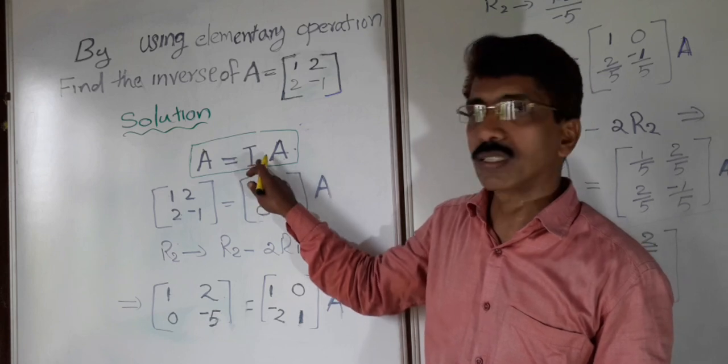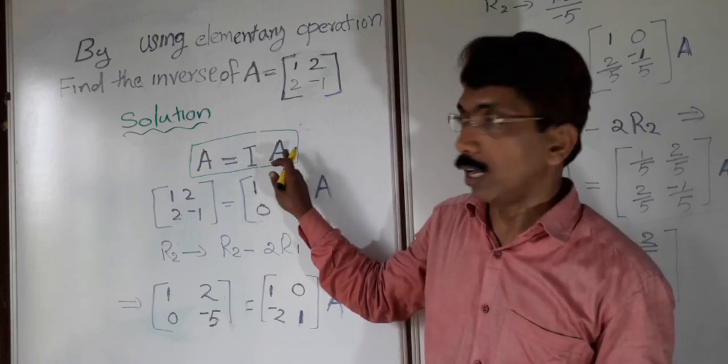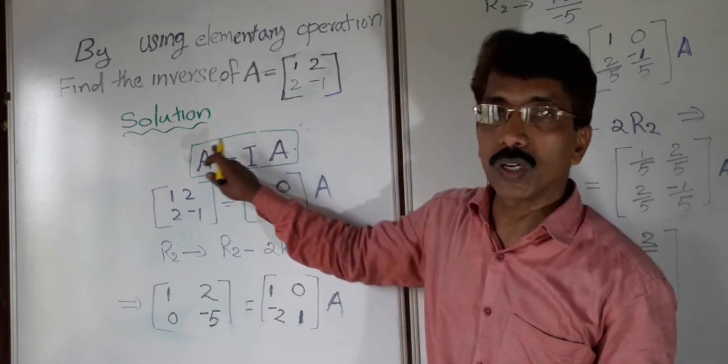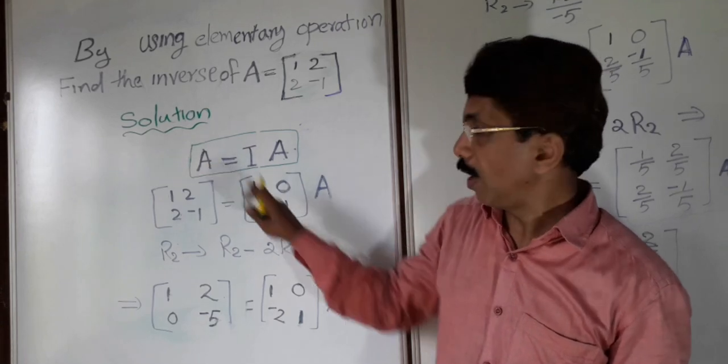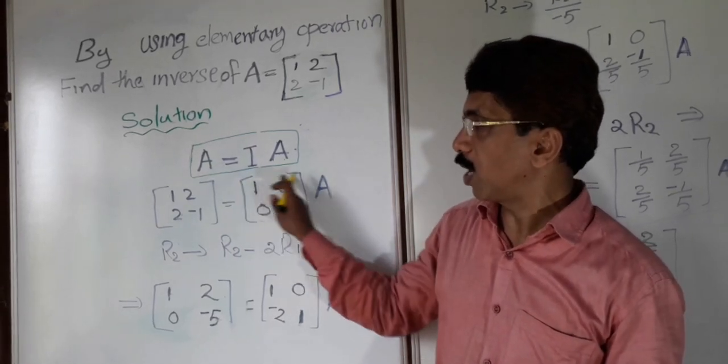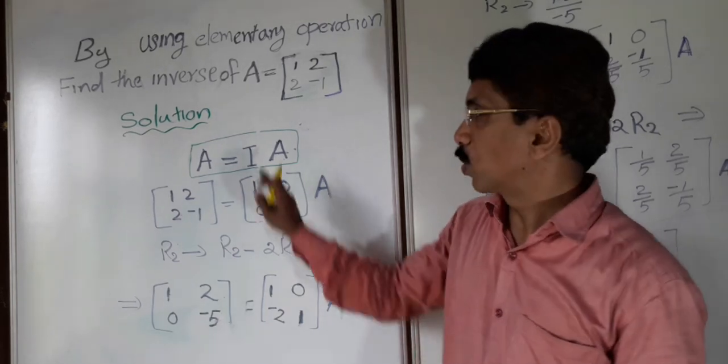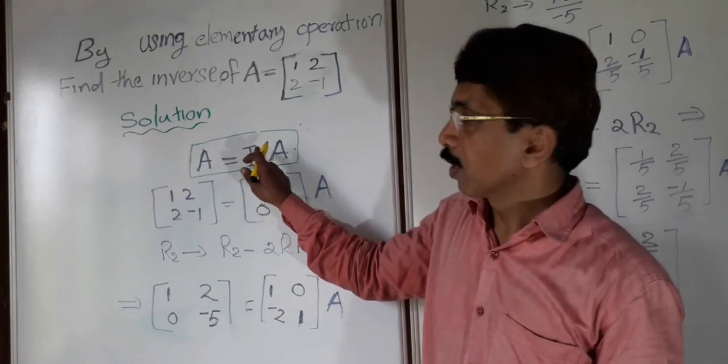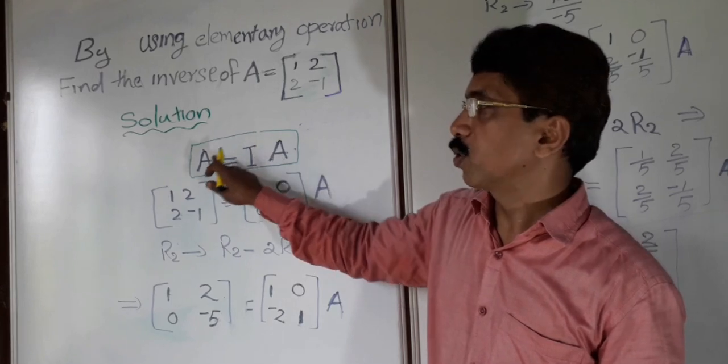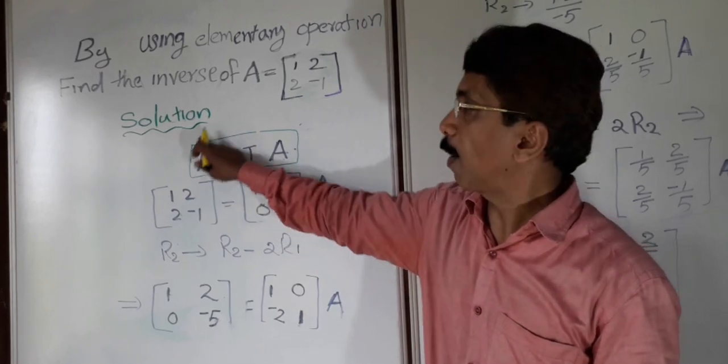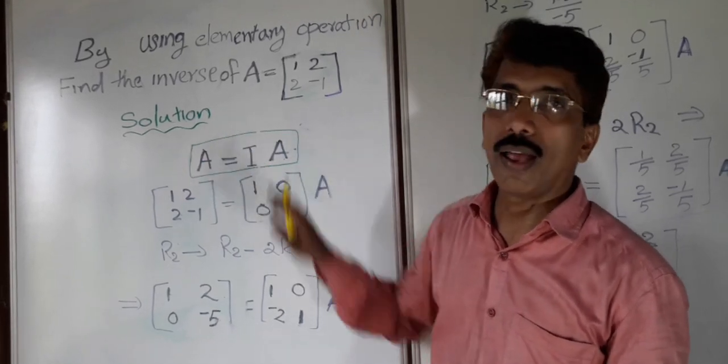I means identity matrix. You know that any matrix, if you multiply with identity matrix, you will get the same matrix. For example, this is an identity matrix: 1, 0 on the diagonal, 1, and all other elements are 0. So if you multiply any matrix with identity matrix, you will get the same matrix. This is the property we are using to find A inverse.